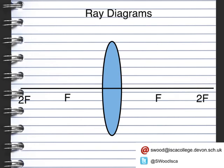Now we have the setup for how we can actually draw ray diagrams. On here we've got our convex lens, and then two bits of information: one in front of the lens which is F — the focal length — and then the focal length at the back. And then further on we've got 2F, which is two times the focal length.